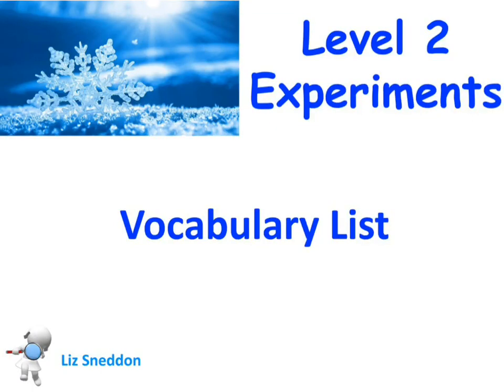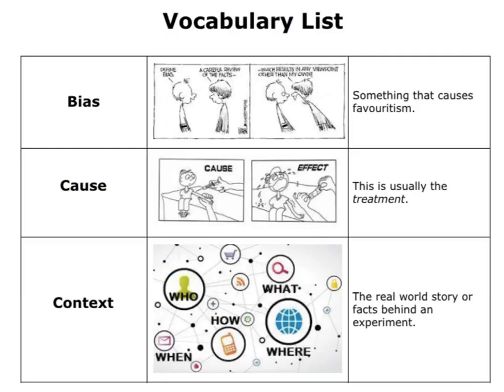Let's have a look at some of the vocabulary around experiments. The first one, in alphabetical order, is bias. When I'm talking about bias, that means I'm favouring one thing over another, or a person over another, or a treatment over another. For example, I love Nike but I hate Adidas — that's a bias. I'm more likely to choose one than another. When we're designing experiments, we don't want any bias. We want our experiments to be free from bias.